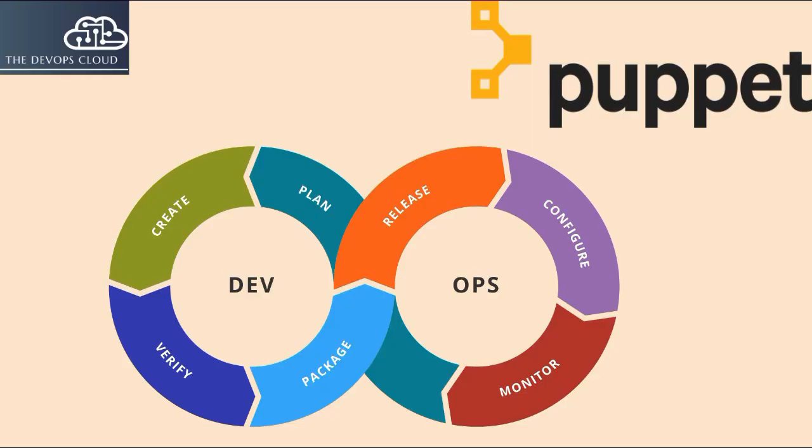What is DevOps? DevOps is a culture which promotes collaboration between development and operations teams to deploy code to production faster in an automated and repeatable way. The word DevOps is a combination of two words: development and operations. DevOps helps to increase an organization's speed to deliver applications and services, allowing organizations to serve their customers better and compete more strongly in the market.